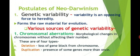Now we will discuss the postulates of Neo-Darwinism. The first is genetic variability. Variability is an opposing force to heredity; it forms the raw material for evolution. We will now see the various sources of genetic variability.